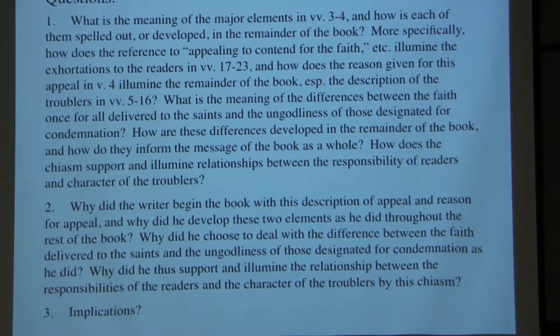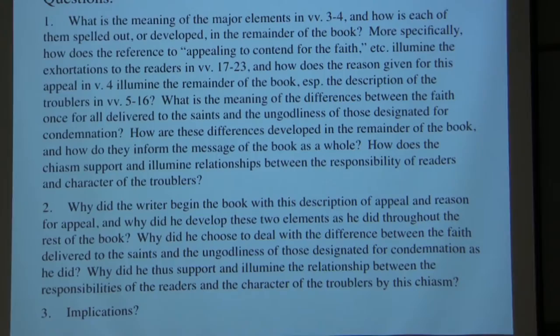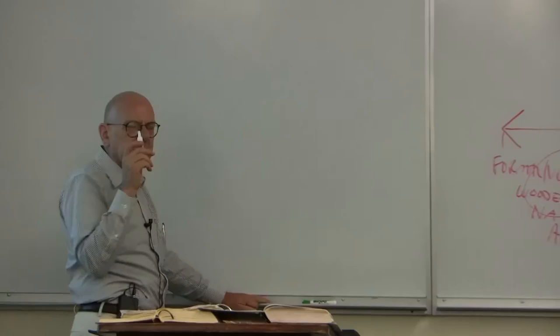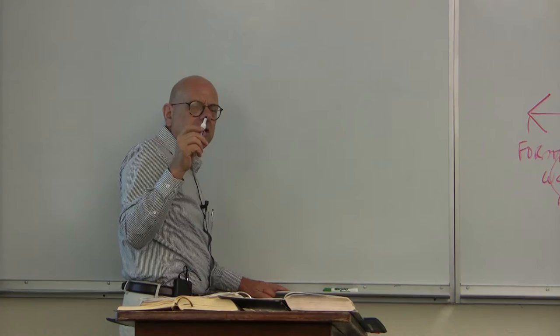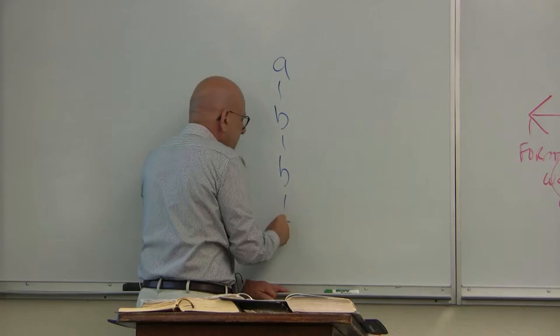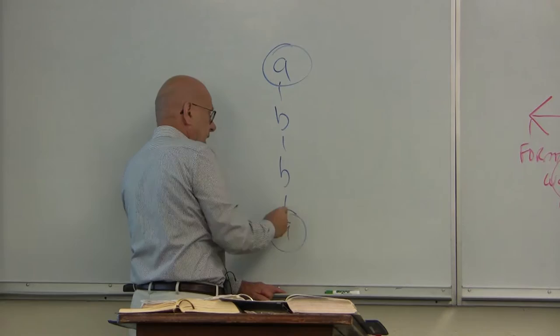One of the functions of chiasm is that it generally suggests that the most significant thing is A and A prime. So when you have a chiasm like A, B, B, A — one of the purposes of chiasm is to indicate that the A and A prime is really the most significant thing, and that B and B prime tend to be relatively secondary.